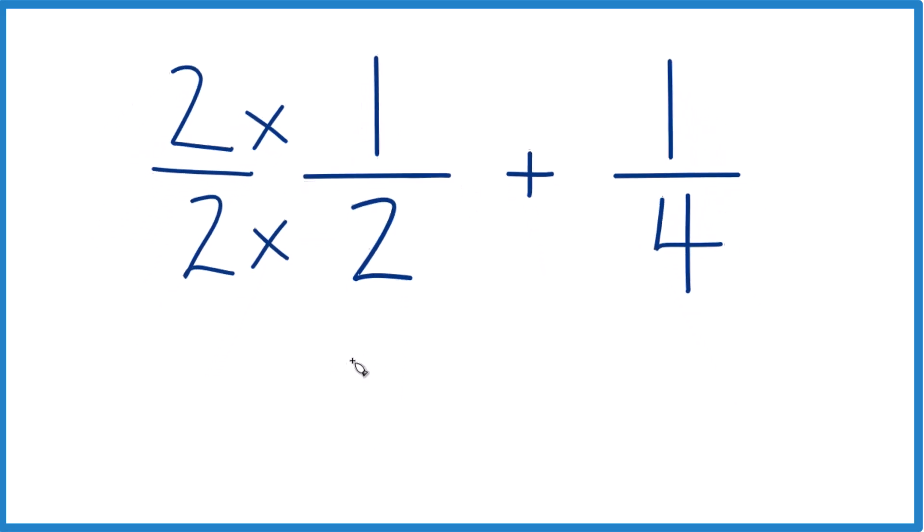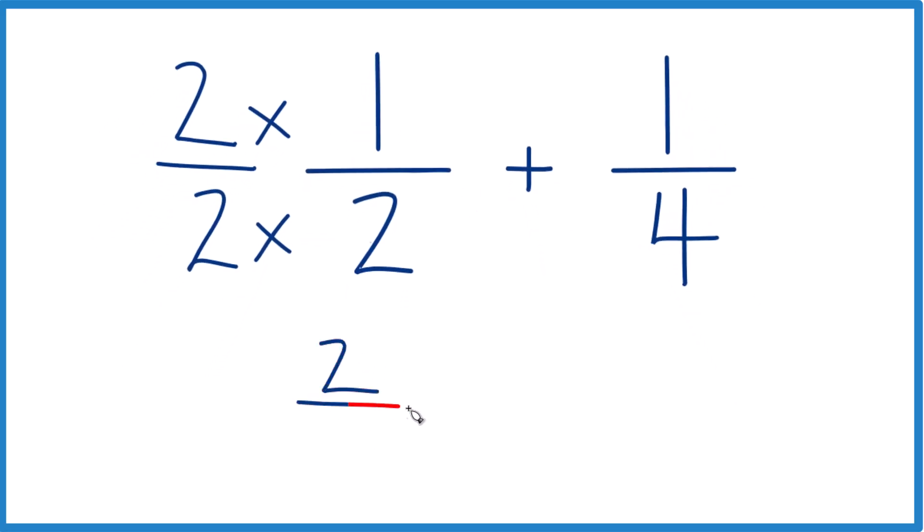But now, 2 times 1, that's 2. 2 times 2, that's 4. There's that denominator of 4. And we add that to 1 fourth. 2 plus 1 is 3. And we keep the 4 the same, 3 fourths. So 1 half plus 1 fourth, that's 3 fourths.